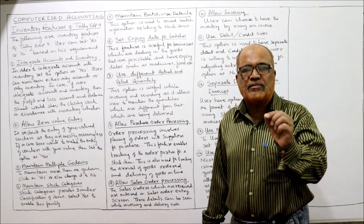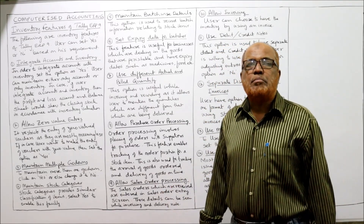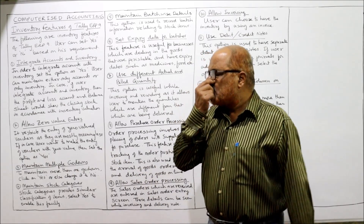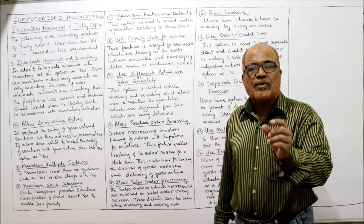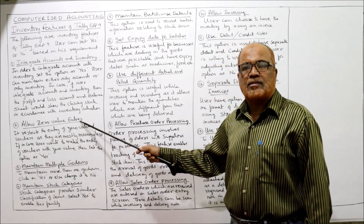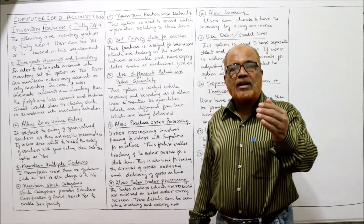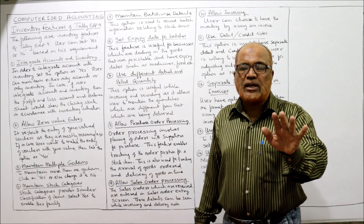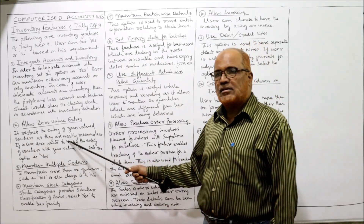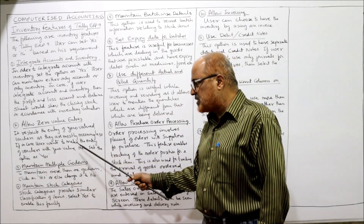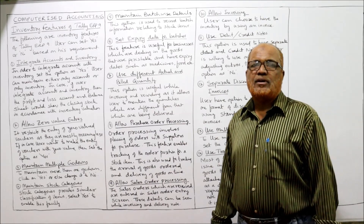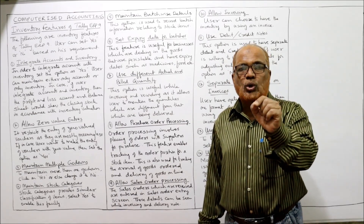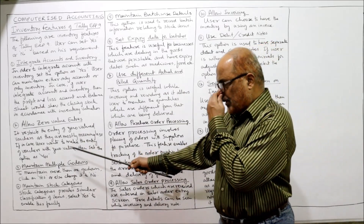The second feature is: allow zero value entry. This means a voucher or document is raised but with the value zero — in other words it is a meaningless voucher. This feature restricts the entry of zero-valued vouchers as they are mostly meaningless. If the user selects yes, even zero-value entries will be recorded. If no is selected, zero-value entries will not be recorded.